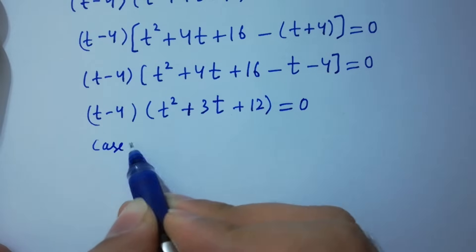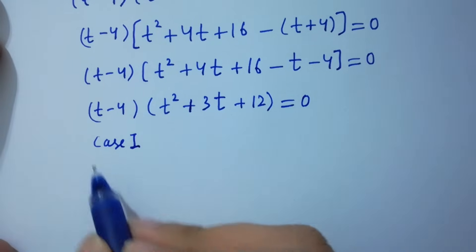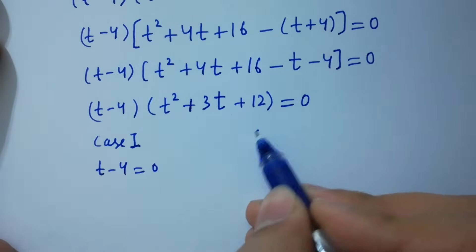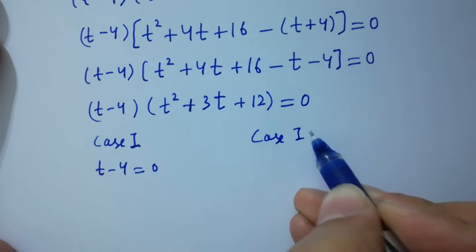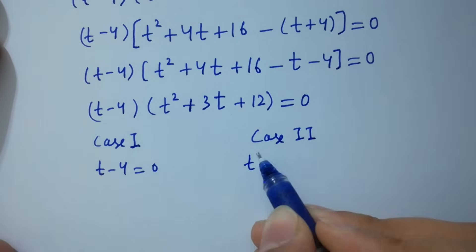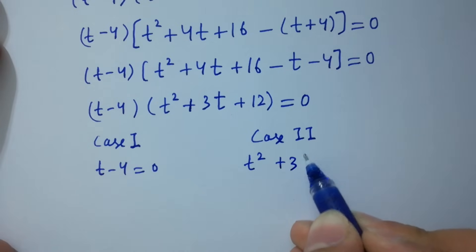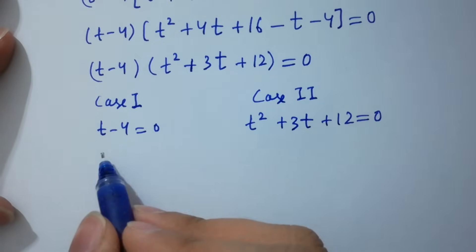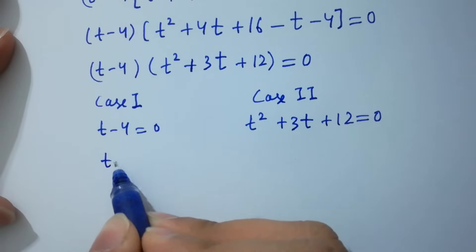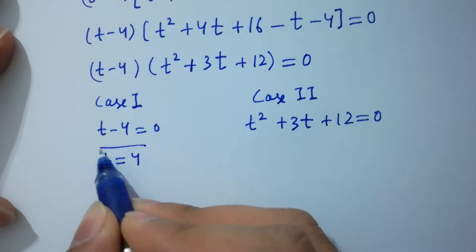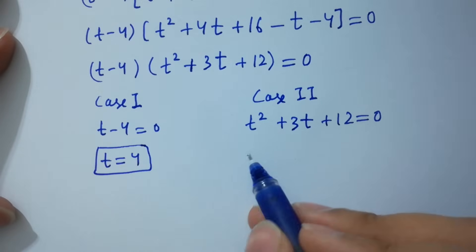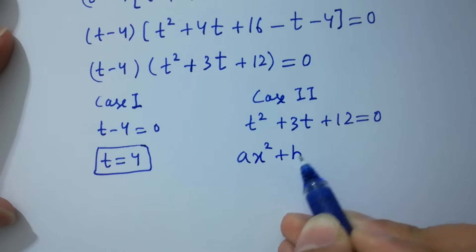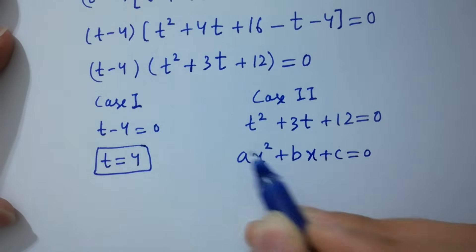Case 2 — t squared plus 3t plus 12 equals zero. From Case 1, t minus 4 equals zero, so t equals 4. The second case is a quadratic equation in the form ax squared plus bx plus c equals zero.